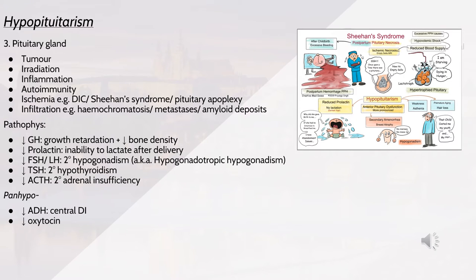At the pituitary gland level, causes include tumours, inflammation, irradiation, autoimmunity or ischemia such as DIC, Sheehan syndrome or pituitary apoplexy. Sheehan syndrome is postpartum haemorrhage, therefore postpartum necrosis of the pituitary gland. During pregnancy, there's hypertrophy of the prolactin-producing region which becomes ischemic. Blood loss during delivery leads to hypovolemia, causing vasospasm of the hypophysial vessels and ischemia. Empty sella turcica can be seen on imaging.